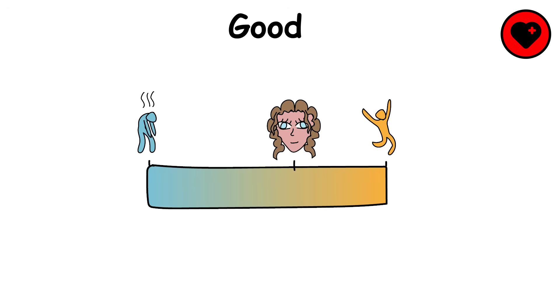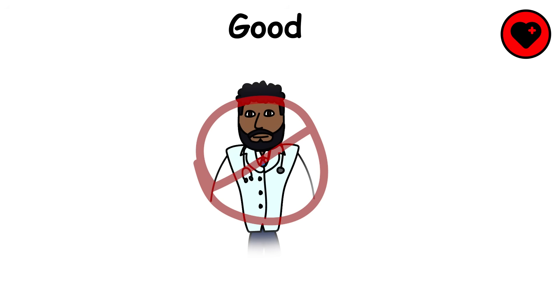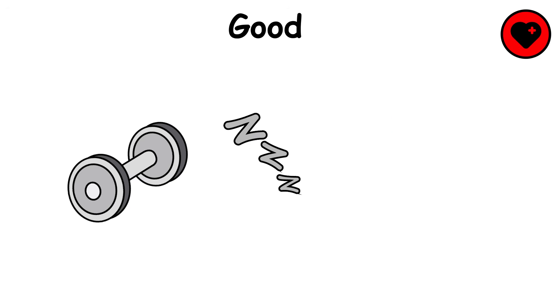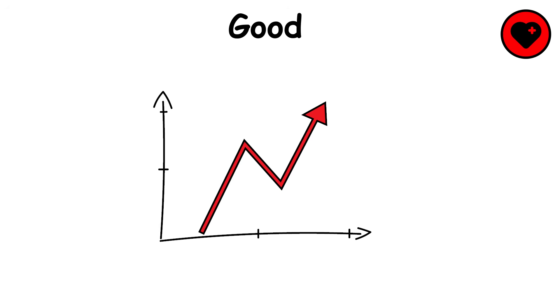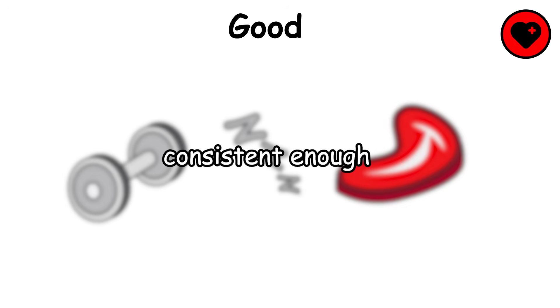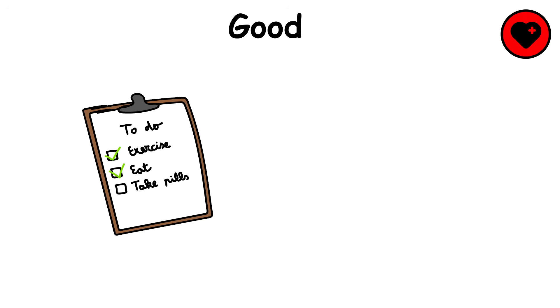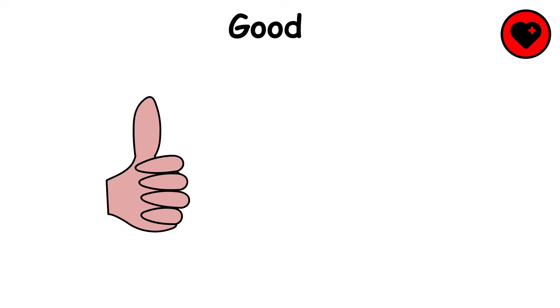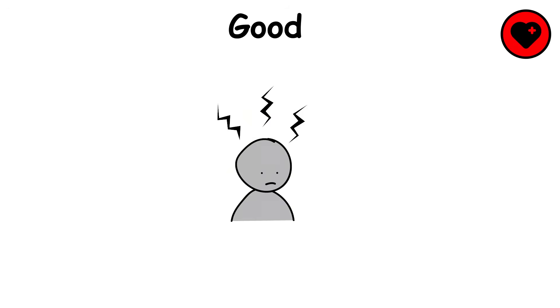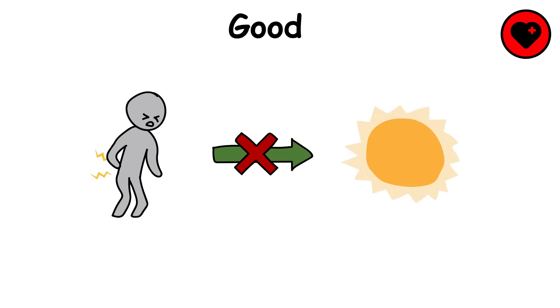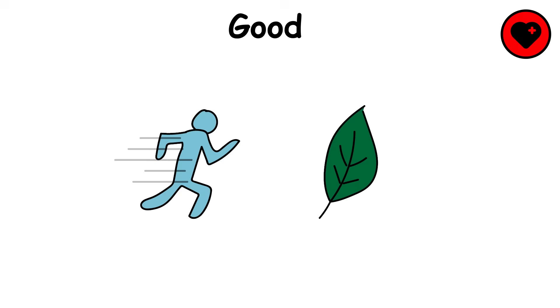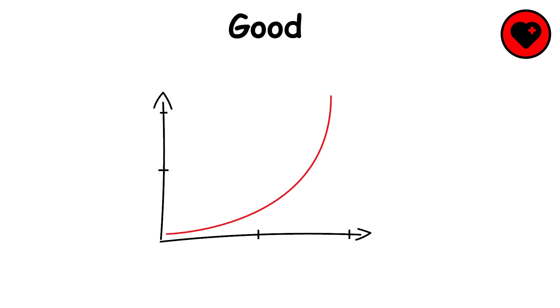Good health is when the body feels balanced and reliable every day. People at this level have high baseline energy levels, recover quickly from illnesses, and rarely need to see a doctor. Exercise, sleep, and diet may not be fully optimized, but they are consistent enough to keep the body strong and the mind clear. Small healthy habits have turned into second nature, making it easier to stay consistent without overthinking. Stress is easier to manage, and minor aches don't interfere with daily life.